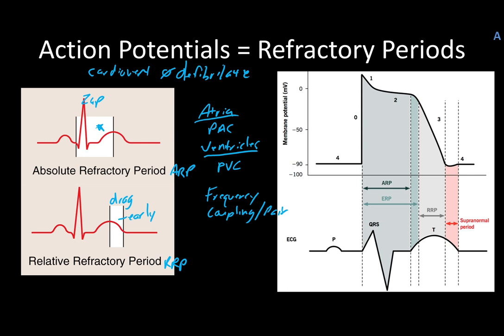In terms of a practice update, the R on T phenomenon, which we typically think would lead to something like torsades — new information actually shows they've studied it and your risk for torsades is essentially the same whether you have coupling or R on T; one's not worse than the other, they're both equally bad. Just because they're doing R on T, you don't have to get as excited as you used to. You should still be worried, but R on T alone is not the grave prognosis it used to be.